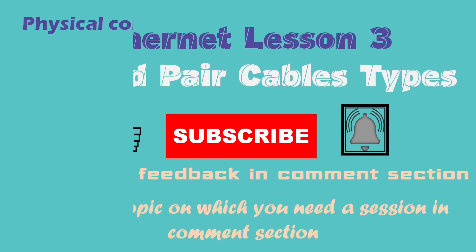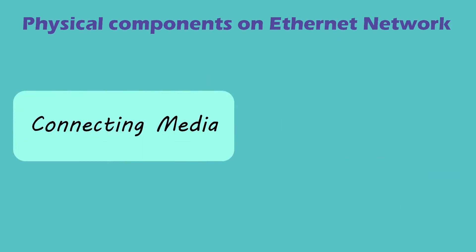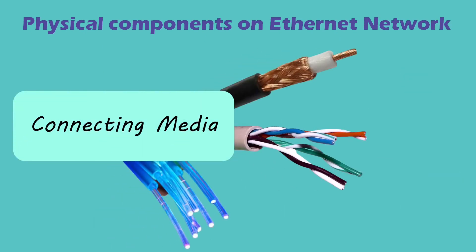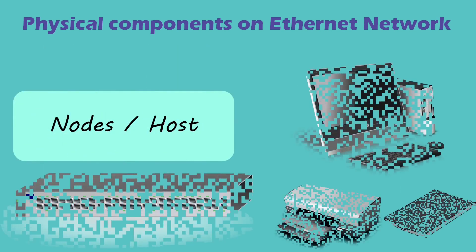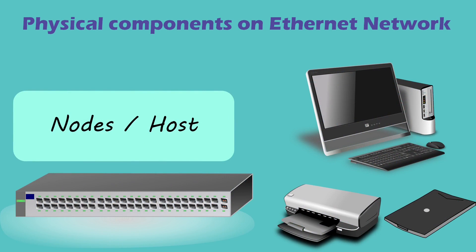The physical components on an Ethernet network are connecting media, which could be either coaxial cable, twisted pair cable, or optical fiber. There is an RJ45 connector for connecting the cable to the associated node — it's an 8-pin connector as shown in the figure here. Nodes or hosts include computers, switches, hubs, etc.